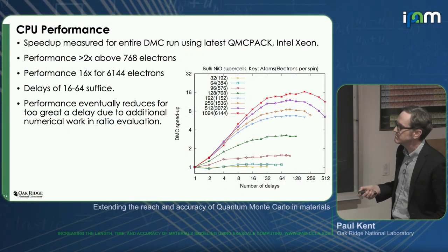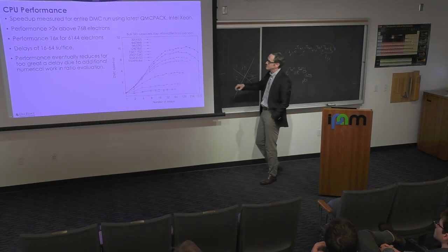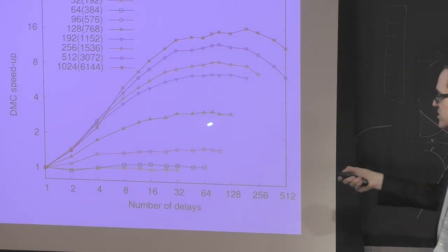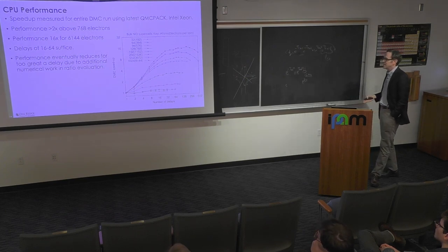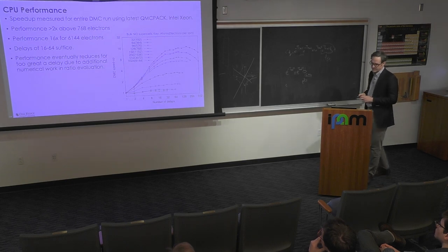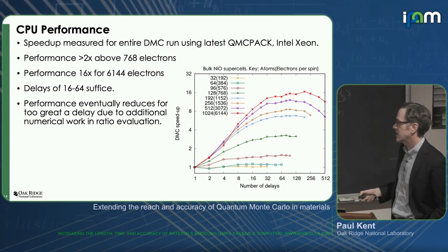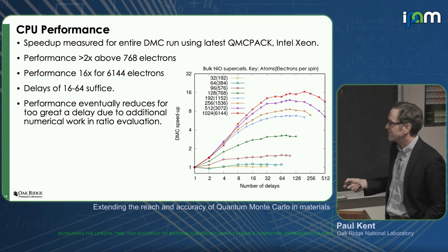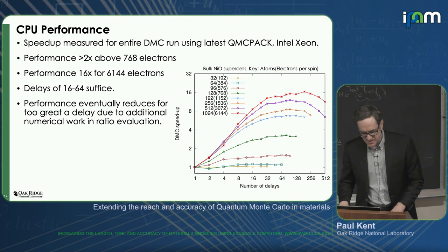How does it perform? The vertical axis is the speedup of the whole run relative to Sherman-Morrison, plotted against the number of delays, for varying system sizes. The green result for 128 nickel oxide atoms shows more than doubled speed for the entire run. For the largest case — 1000 nickel oxide atoms, around 6000 electrons of each spin — we see more than an order of magnitude improvement in the runtime of the whole application. Delays of 16, 32, or 64 seem to suffice. If we delay for too long, performance starts to come back down because we're being bitten by the extra work in the procedure.